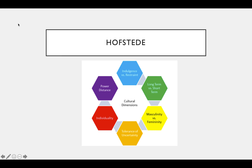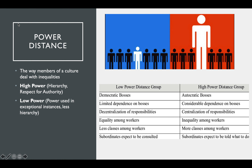Let's go into the first one: power distance. This is the way members of a cultural group deal with inequalities. Within the culture, is there high power or low power? High power means there is a hierarchy, more respect for authority, and a need for rules and regulations. Whereas in low power, there's more equality and power should only be used in legitimate circumstances — less hierarchy overall.